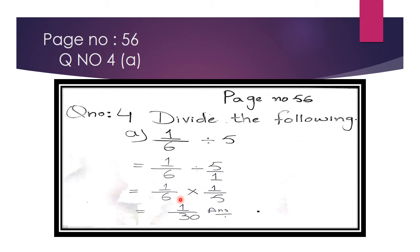Now we check if any numbers can be cancelled. Here we cannot cancel 1 with 6 or 1 with 5. So we multiply the numerators: 1 × 1 = 1, and the denominators: 6 × 5 = 30. Our answer is 1/30.